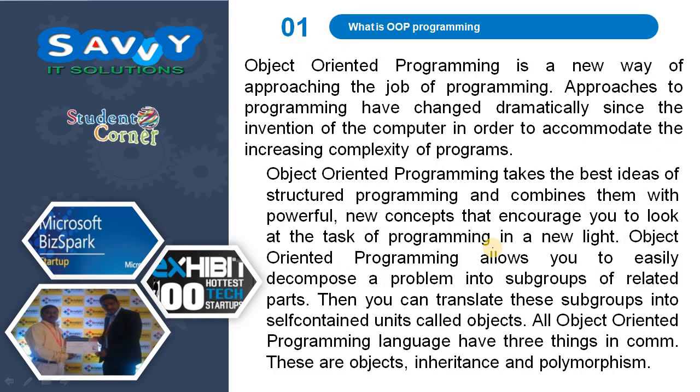Already we discussed in the first video that Object Oriented Programming is a methodology, not a technology. Methodology means preparing the rules, and technology uses the methodology instead of writing programming languages. Object Oriented Programming is a new way of approaching the job of programming. Approaches to programming have changed dramatically since the invention of the computer, in order to accommodate the increasing complexity of programs.